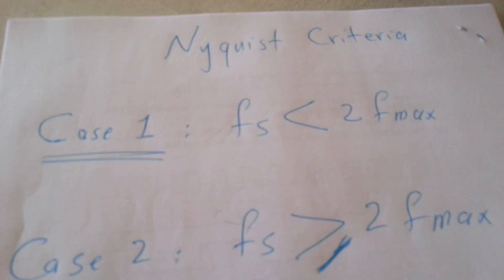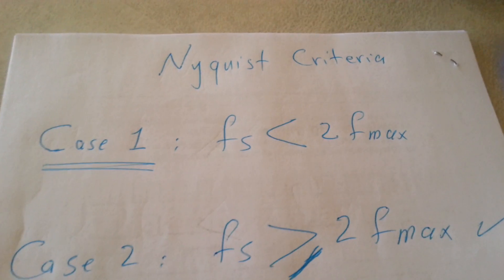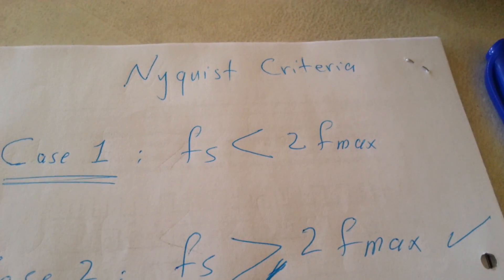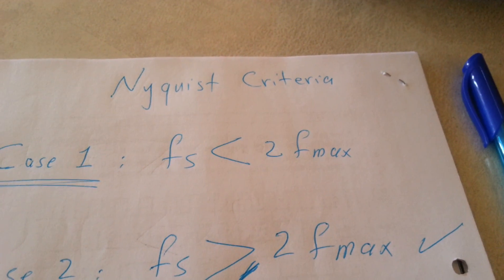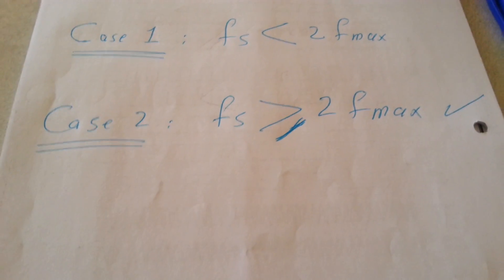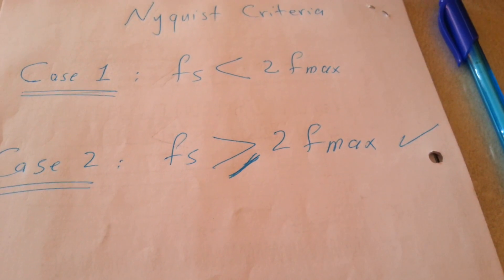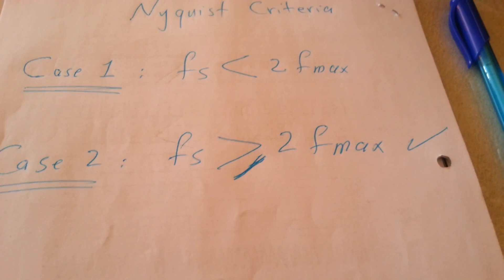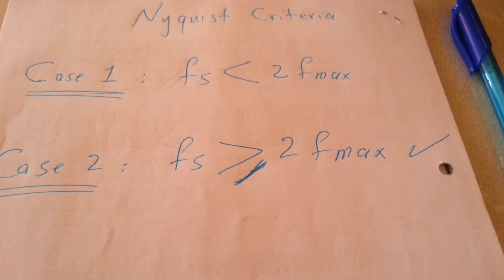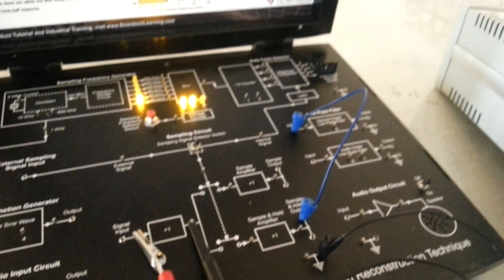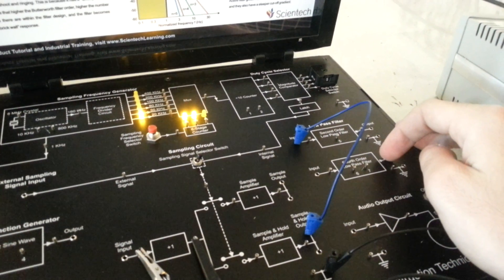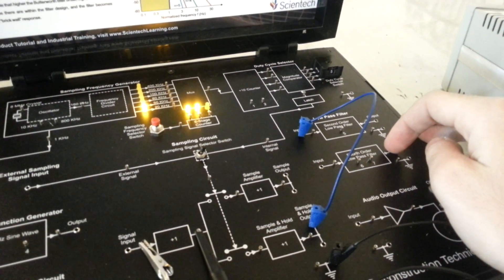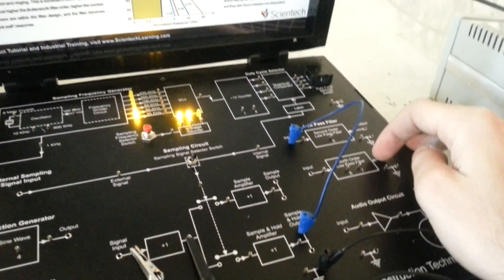I will demonstrate the Nyquist criteria by two cases. The first case: not satisfying the Nyquist criteria by making the sampling frequency less than double the maximum frequency content of the information signal. The second case: making the sampling frequency equal to or greater than double the maximum frequency content of the information signal. In each case, I will test the reconstructed signal by the trainer board after the low-pass filter, and study the shape and frequency of the reconstructed signal.